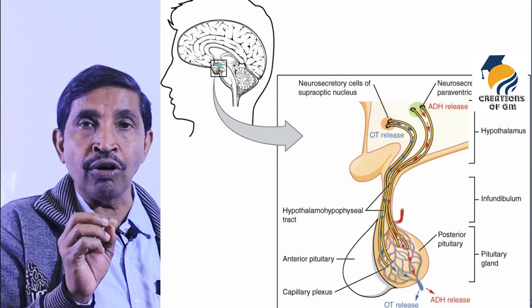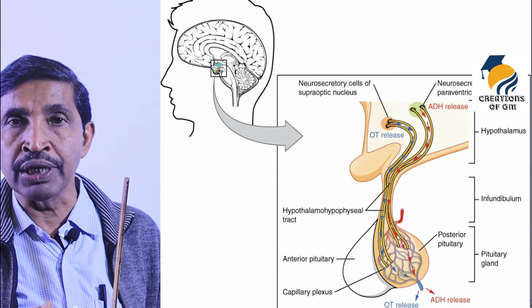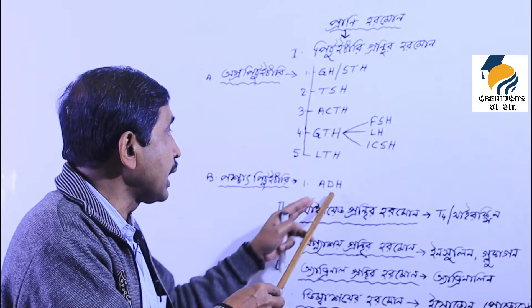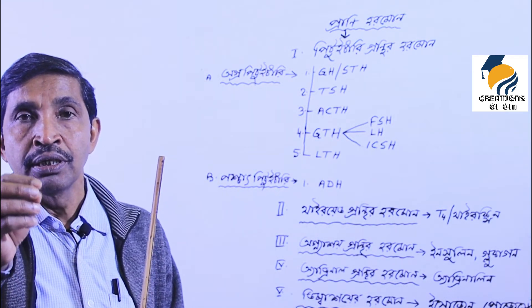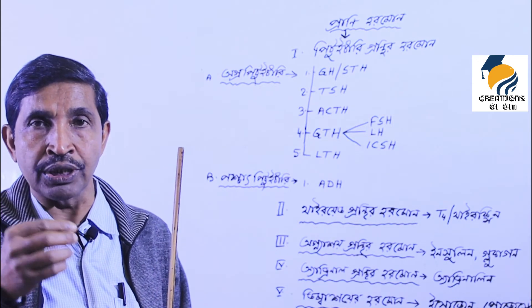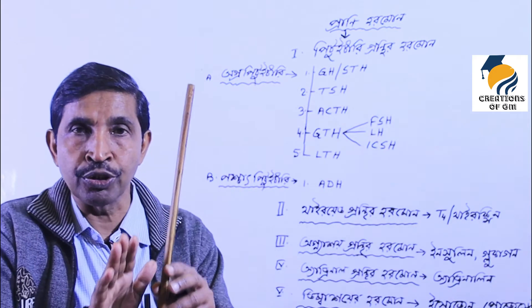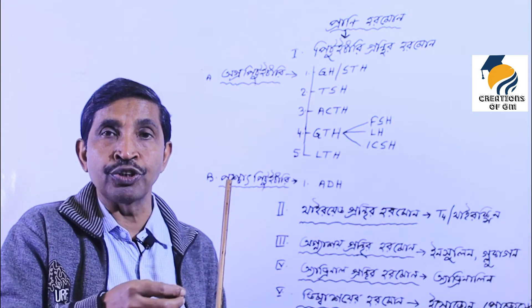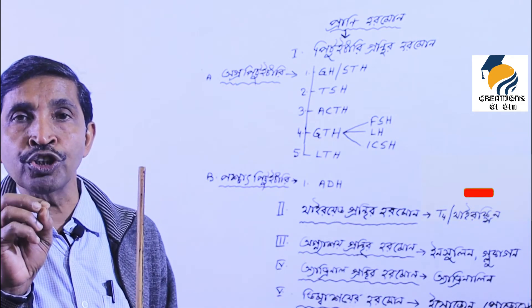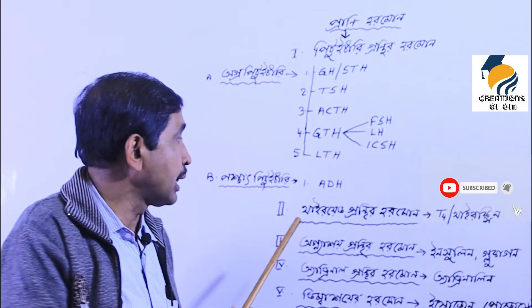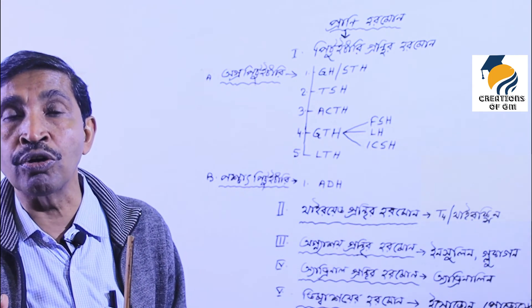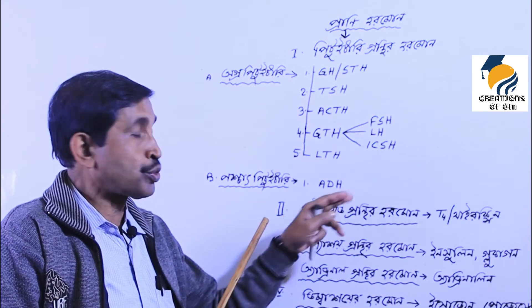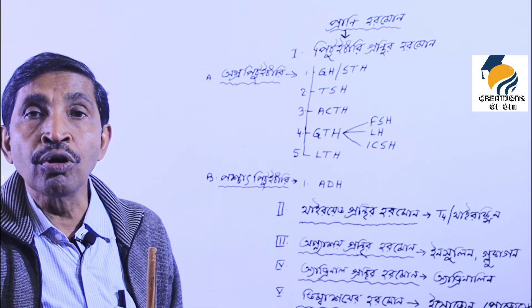ADH (anti-diuretic hormone), also called vasopressin — what does it do? In the kidney, the nephron tubules perform reabsorption. If ADH is functioning properly, the reabsorption of water is adequate, meaning urine retains proper water balance. The kidney nephron tubule reabsorption process is regulated by ADH. If ADH is deficient, reabsorption decreases and large amounts of urine are produced.